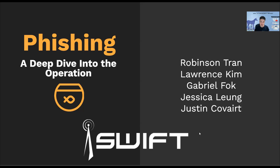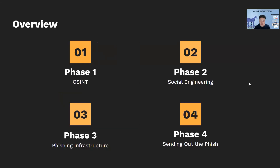We're going to be talking about the operational side of phishing, so it's a little bit more in-depth. We split this up into four phases. The first was OSINT. The second was social engineering. The third was phishing infrastructure. And the fourth was sending out the phish.